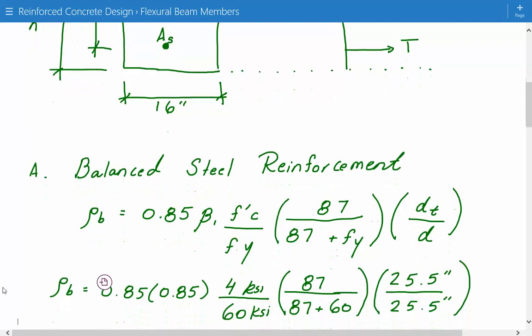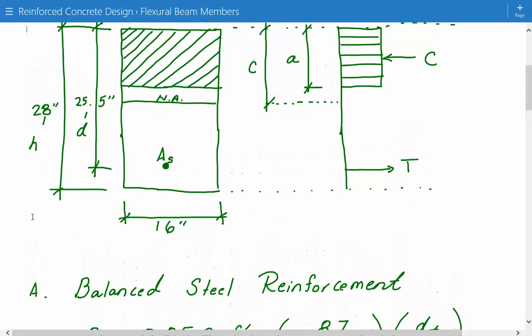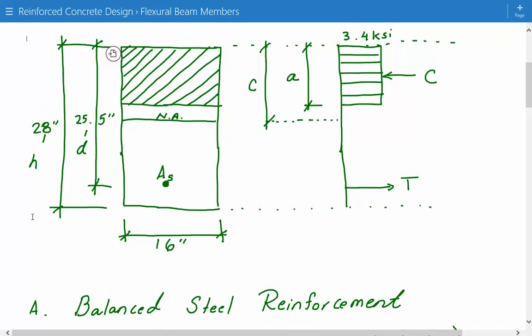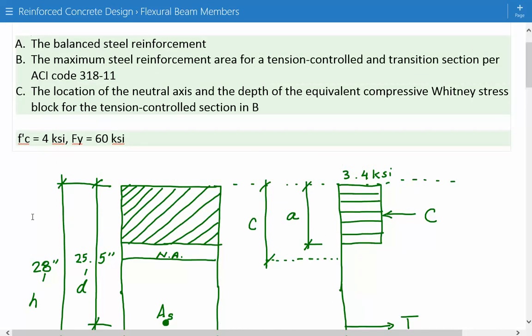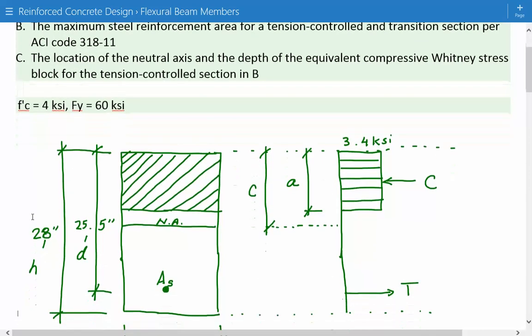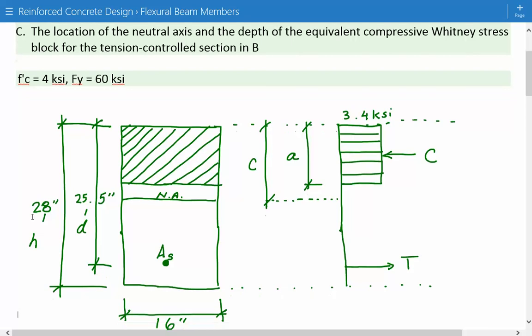We just plug in the numbers. 0.85 and beta 1 is also equal to 0.85, and the compressive strength of concrete is 4 KSI and the yield strength is 60 KSI, and then 87 divided by 87 plus 60. Then DT and D, in our case they're both equal because DT is the distance from the extreme compression fiber to the extreme tension steel location.